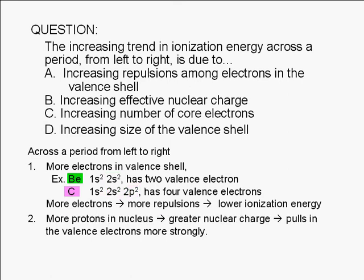Another left to right trend is the increasing nuclear charge. As you go from left to right, you have more protons in the nucleus. For example, beryllium has four protons while carbon has six. There are more protons in carbon pulling in the electrons. Remember that unlike charges attract, the nucleus attracts electrons.